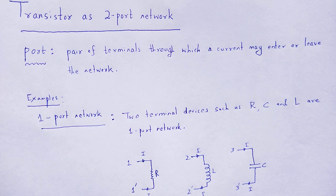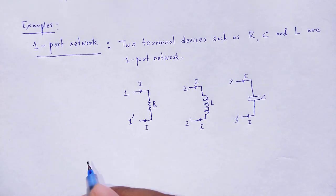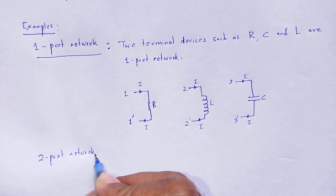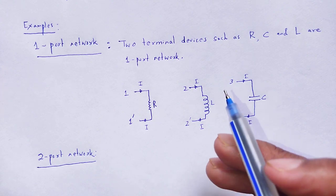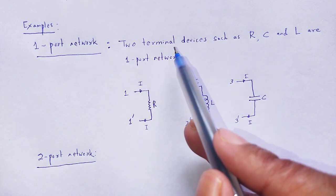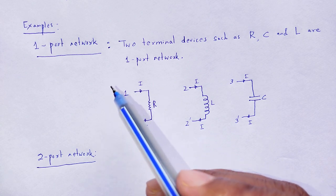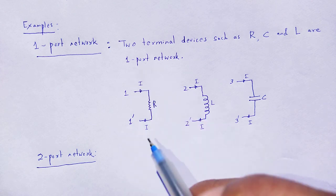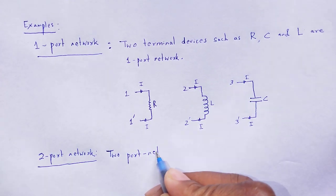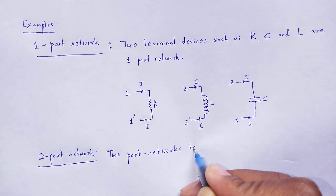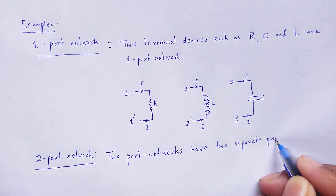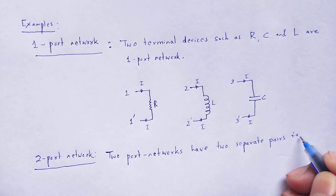For a two-port network, it has four such terminals and two pairs of terminals. A two-port network has two separate pairs, that is four terminals.